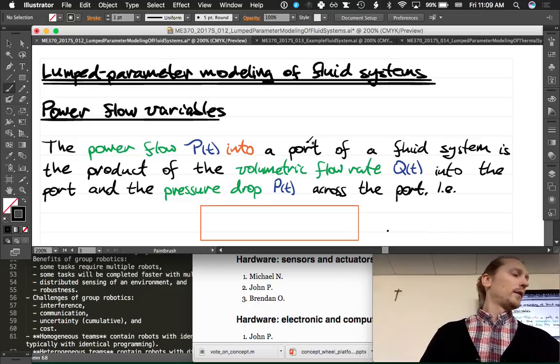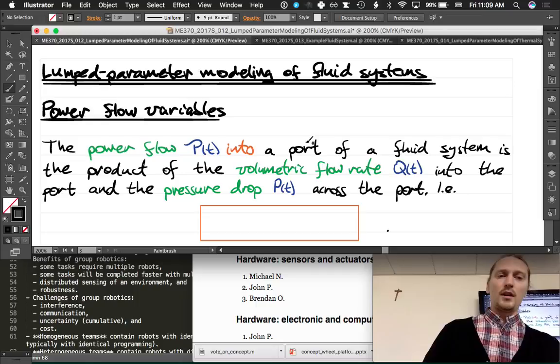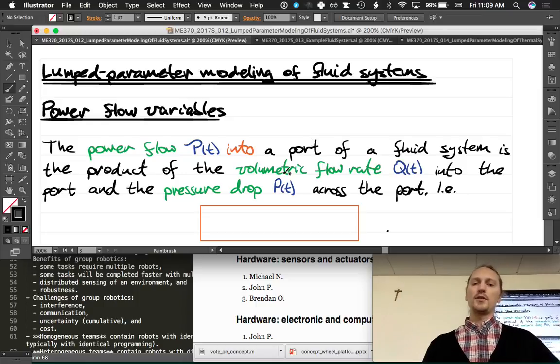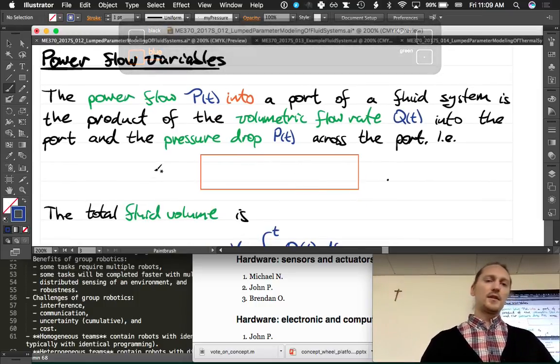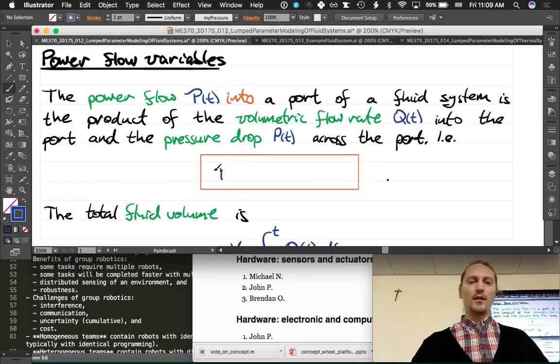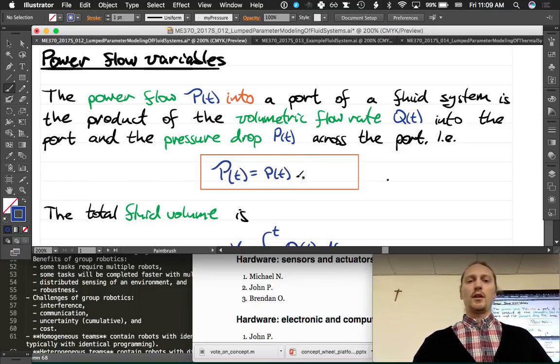And the two power flow variables, you guys have been dealing with these variables in fluids, I'm sure: Q, the volumetric flow rate, and P, the pressure drop across the port. In other words, power is just equal to the product of pressure and volumetric flow rate.